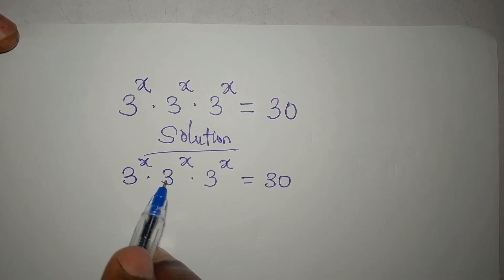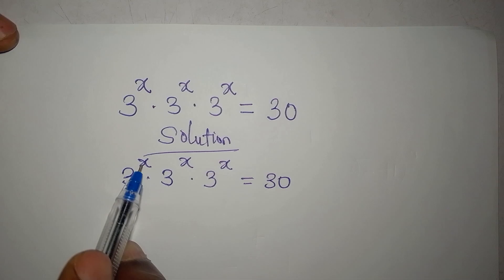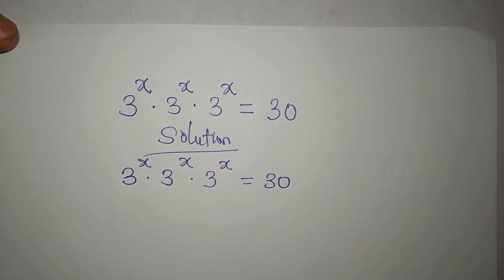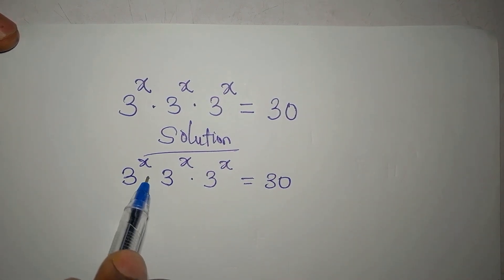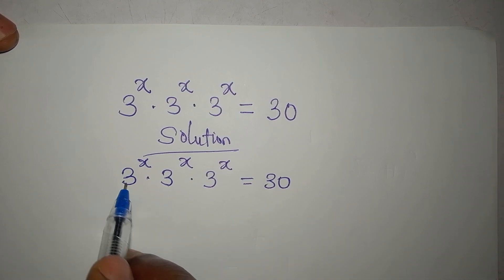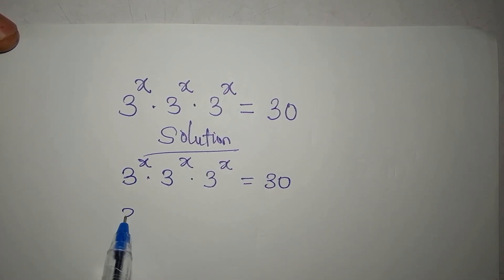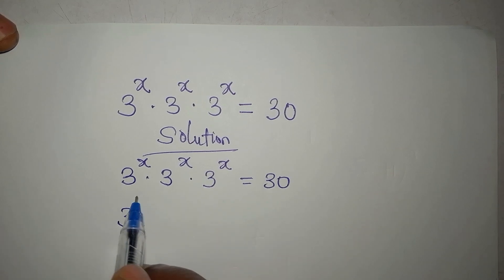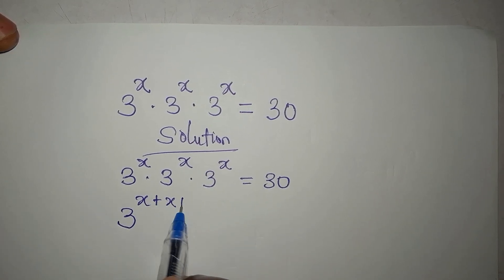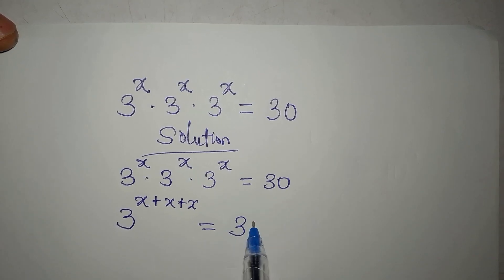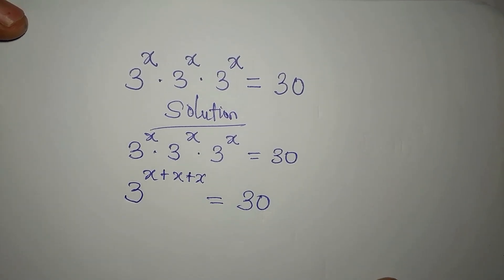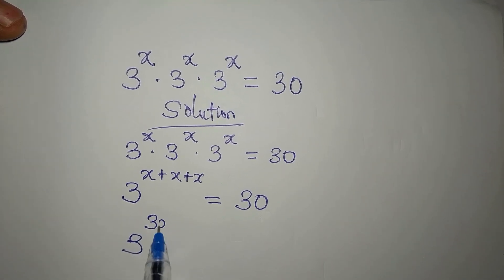This is 3 to the power of x times 3 to the power of x times 3 to the power of x — this is not a decimal point. Because the bases are the same, we add the powers when multiplying. So we get 3 to the power of 3x equals 30.